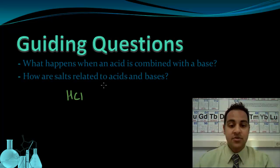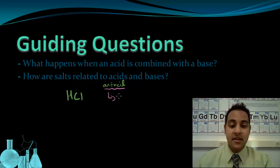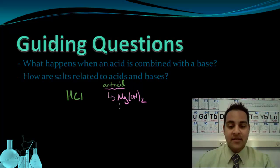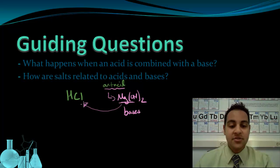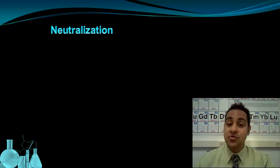To alleviate those symptoms, you take something called an antacid. These antacids contain certain compounds, things like Mg(OH)₂, magnesium hydroxide. The reason this works is that Mg(OH)₂ and compounds like it are bases. This base would react with the hydrochloric acid in your stomach to alleviate those symptoms. That reaction between the acid and the base we call neutralization, or acid-base neutralization.